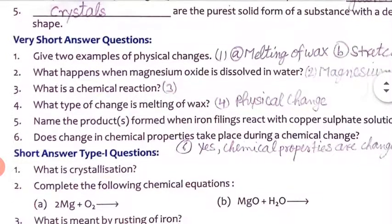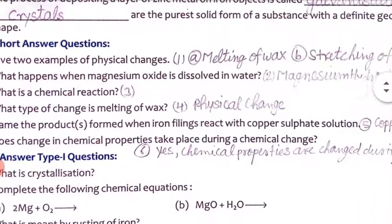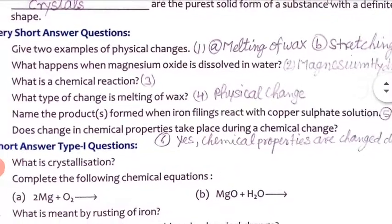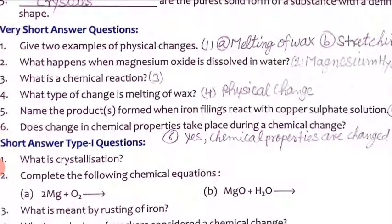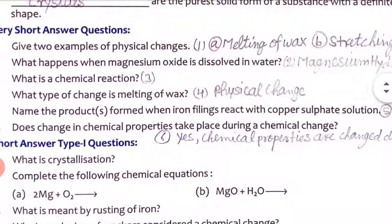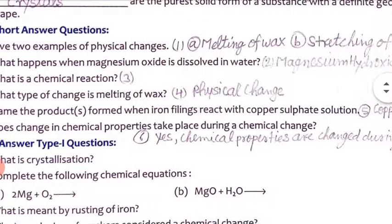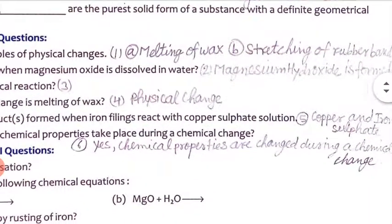Now very short answer type questions. First question: give two examples of physical changes. First, that is melting of wax, and second, stretching of a rubber band — stretching of a rubber band is also called a physical change. Second question: what happens when magnesium oxide is dissolved in water?